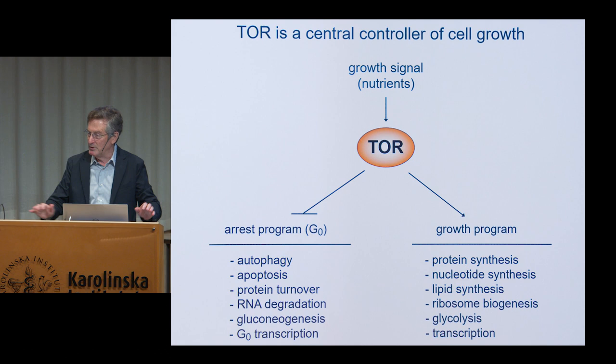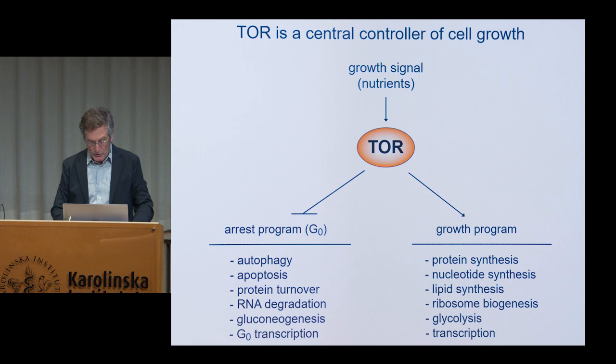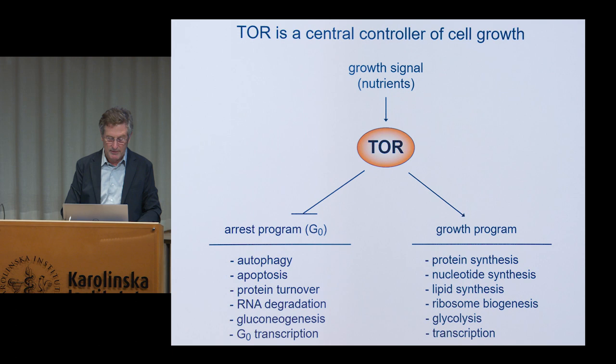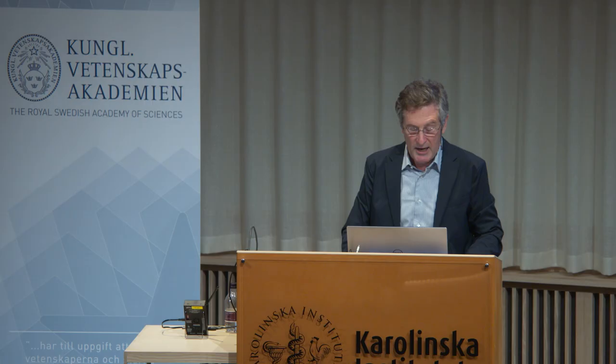So what TOR does is it balances these opposing forces of synthesis and degradation such that the cell will accumulate the appropriate level of mass in response to whatever nutrients might be available. In very simple terms, TOR controls our growth in response to when we eat. So how does TOR actually control all these different cellular processes? There are effector signaling pathways which emanate from TOR, which then intersect with key proteins involved in all these processes.